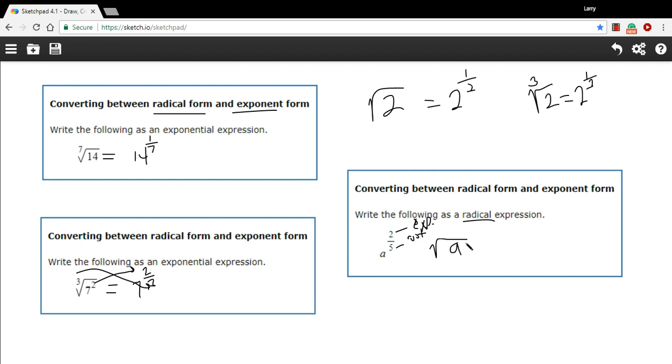So this is going to be a squared and the fifth root of that. So that's our answer. The fifth root of a squared is the same as a to the two-fifths power. So that's a little bit of work converting back and forth between radical form and exponent form.